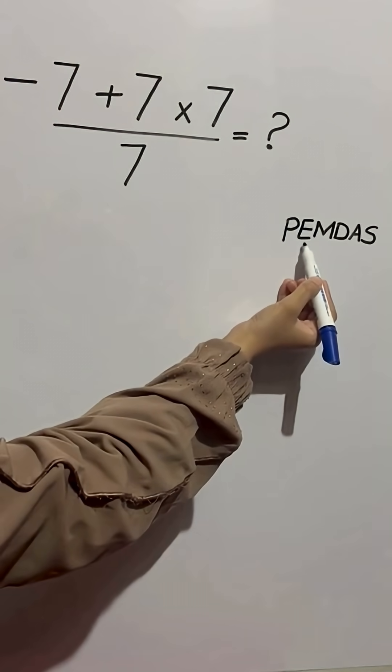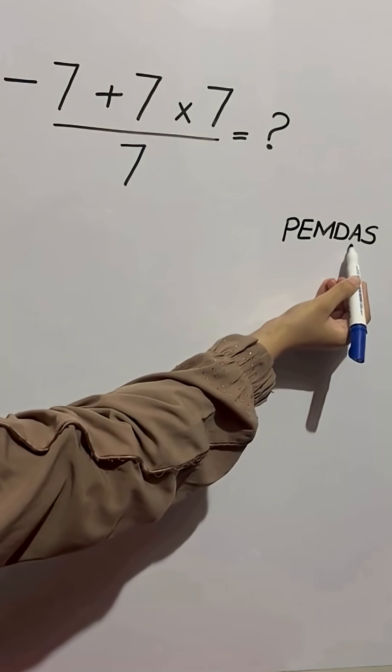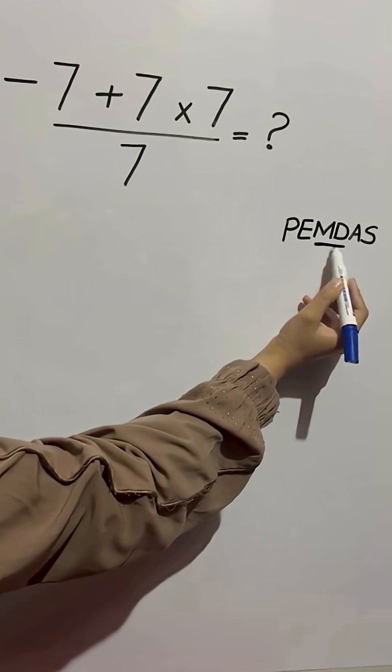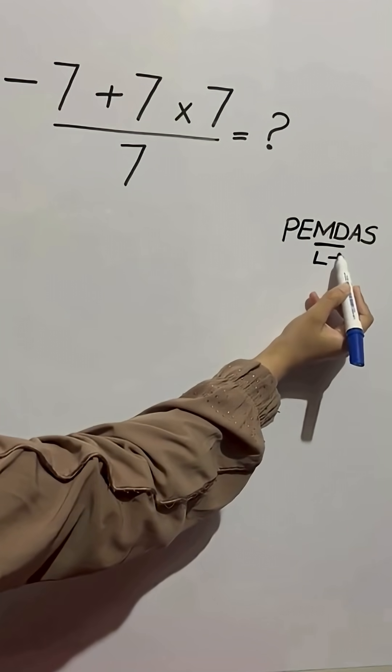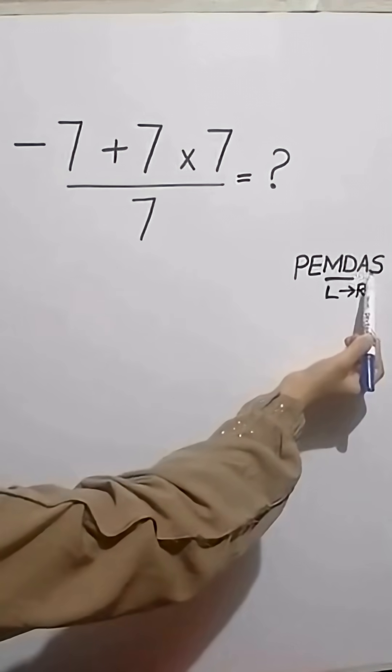Parentheses, exponents, then multiplication and division, and finally addition and subtraction. Also remember multiplication and division are on the same level and we evaluate them left to right. The same rule applies to addition and subtraction.